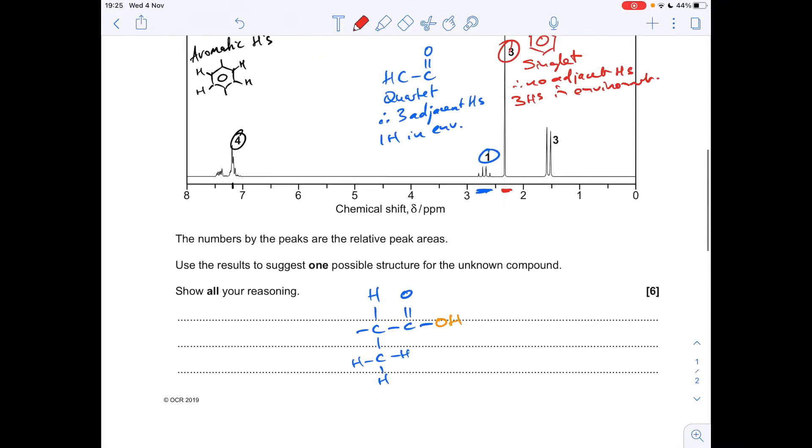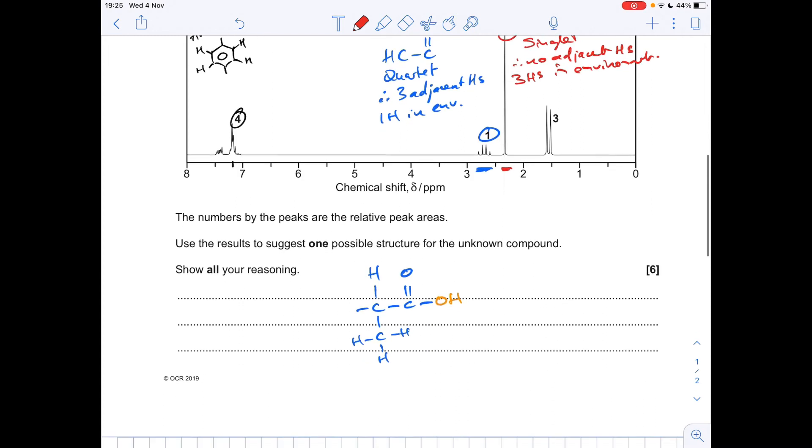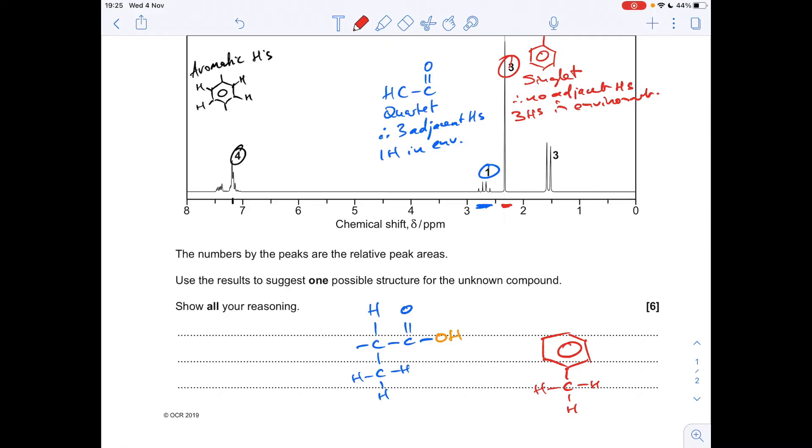So what's this part of the molecule going to look like? Well, we must have a benzene ring with a CH3 attached, so a separate substituent group, which ties in with the fact that we've got two substituent groups. So it's looking like this part of the molecule here, this bond here, is going to go to one of these carbons on the benzene ring.